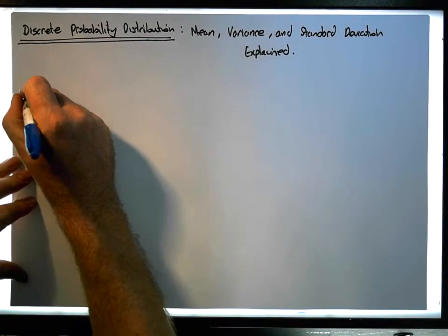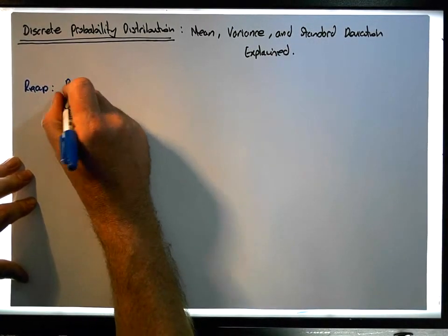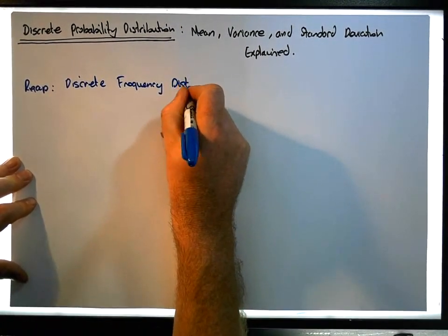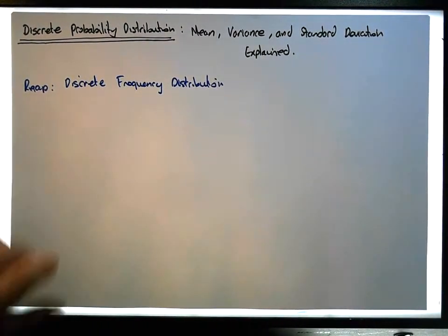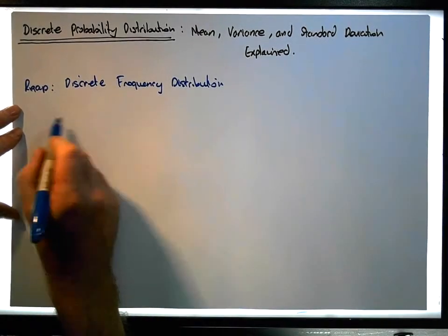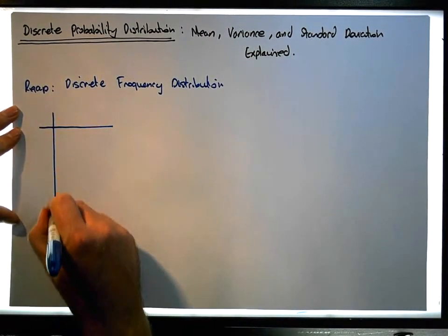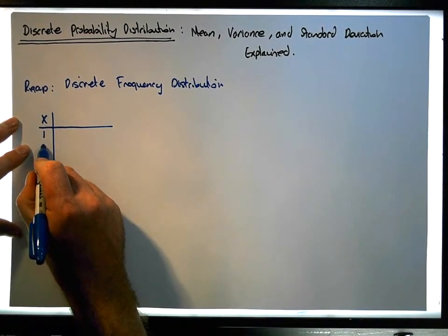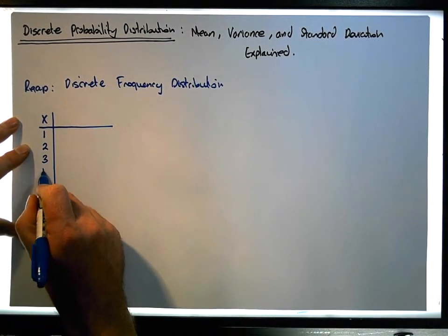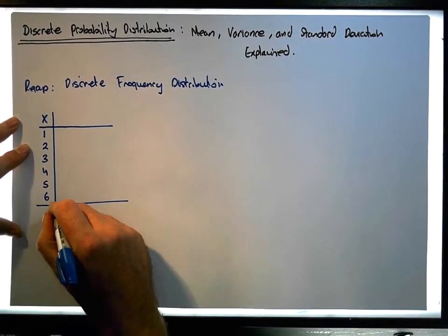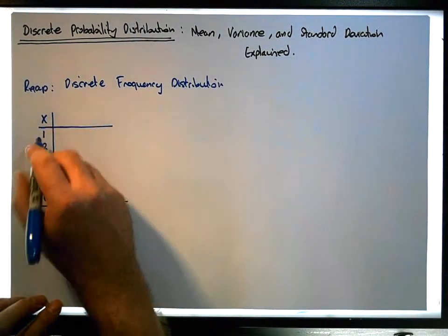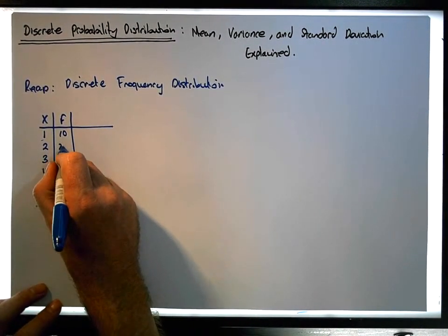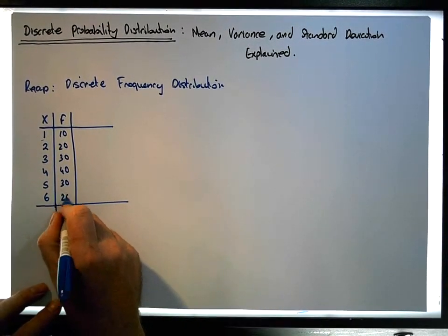Let's just recap. When we have a discrete frequency distribution — let's say it looks something like this, in relation to rolling a die — we have the outcomes, the x values listed here. A six-sided die has six possible outcomes, each face labeled with numbers one through six. Let's say we roll this die a number of times and record the frequency of occurrence of each face value. So our frequencies are: one occurs 10 times, followed by 20, 30, 40, 30 and 20.